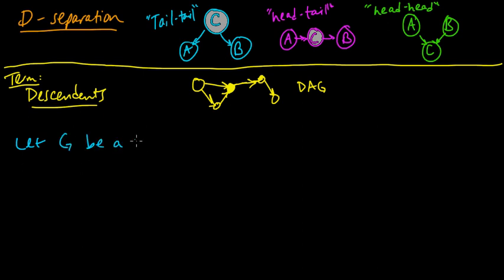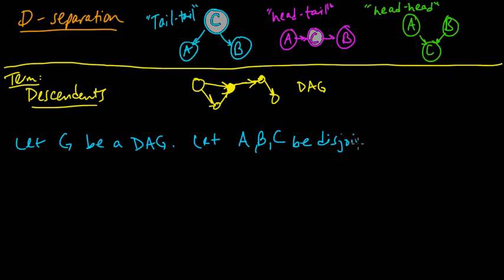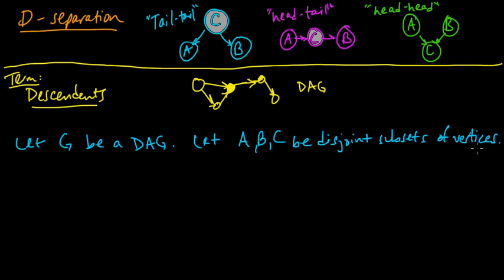Let G be a DAG, a directed acyclic graph, and let A, B, and C be disjoint subsets of vertices of G. We're conflating vertices and random variables since in the graphical model there is a one-to-one correspondence between vertices and random variables. A vertex could also represent a vector of random variables.